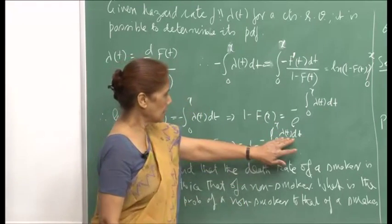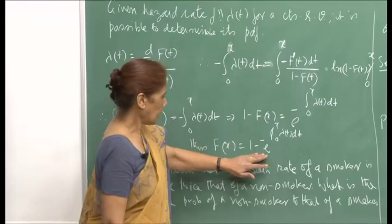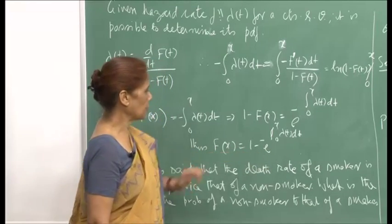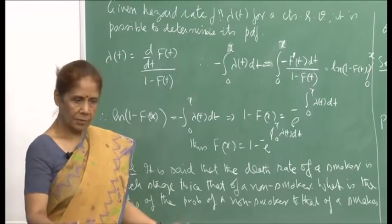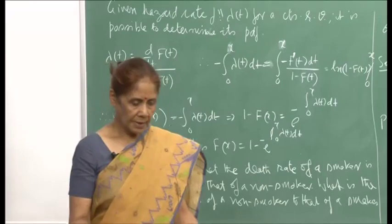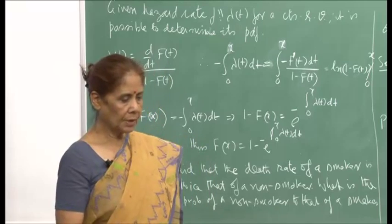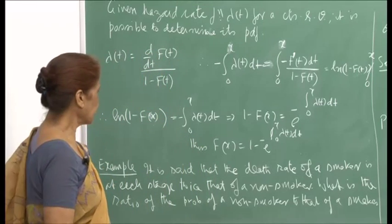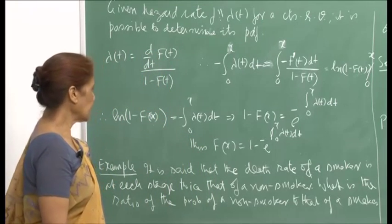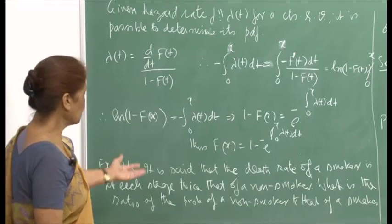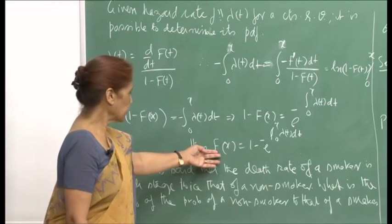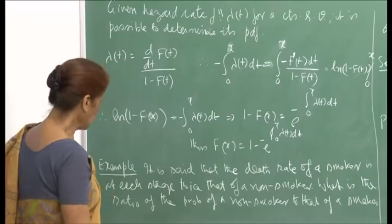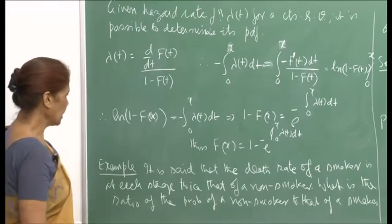If you know lambda(t), you can integrate to obtain F(x). Once you know the cumulative distribution function, you can also determine the PDF. It is enough to know the hazard rate function to determine the distribution.